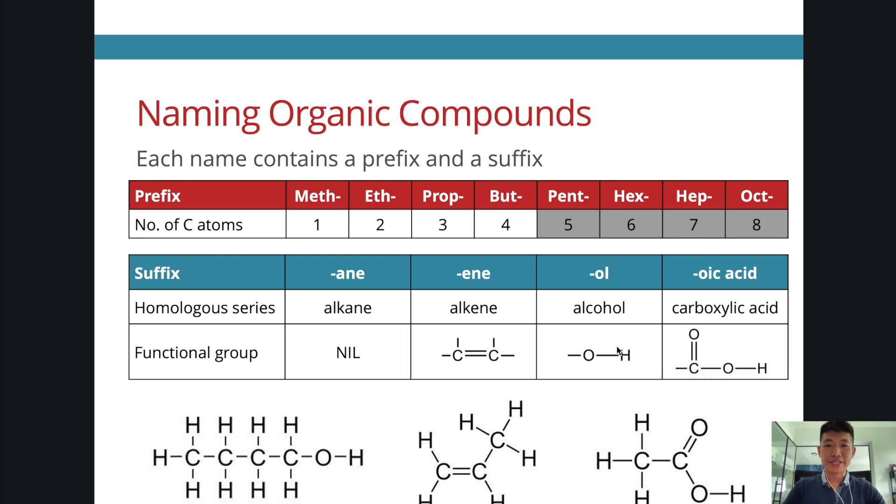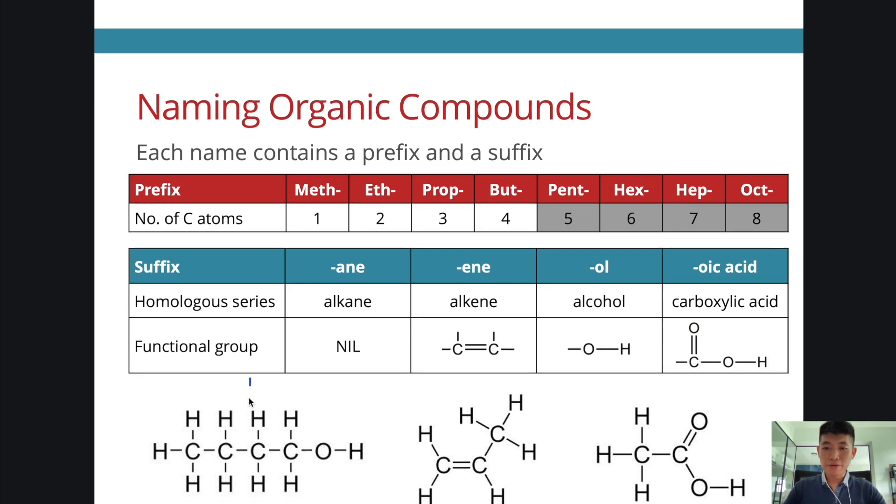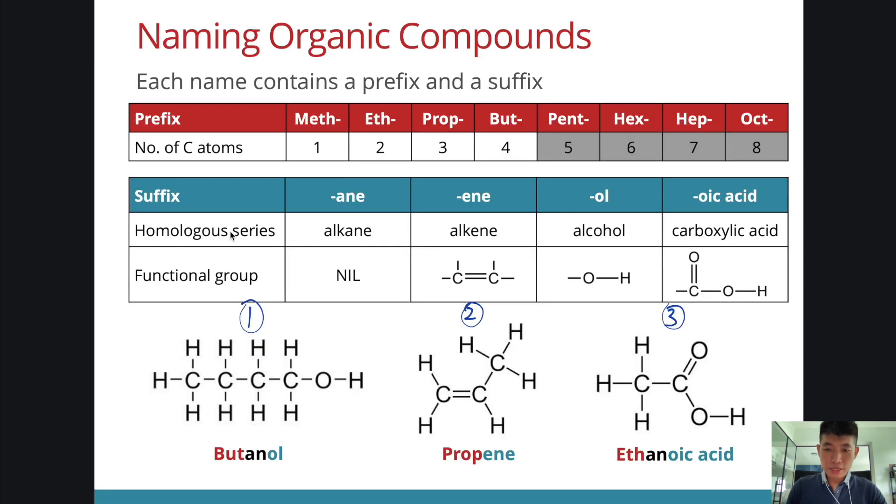Let's do a quick practice. I have three compounds. Are you able to give me their names? You can pause the video and think about it. The first one is called butanol, because it has four carbons and this functional group. Second example, there are three carbons, so it's prop-, and this functional group tells me it ends with -ene. Third example, there are two carbons, so it must start with eth-. And it has this functional group COOH, which means it is -oic acid, so we call it ethanoic acid.